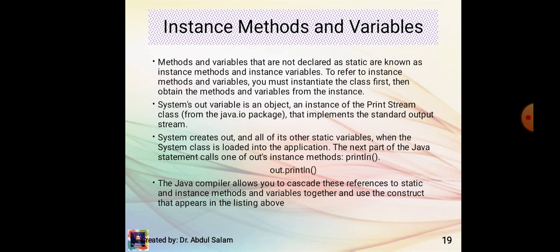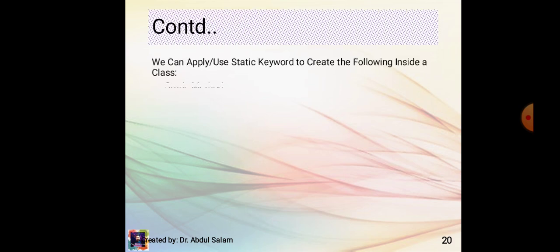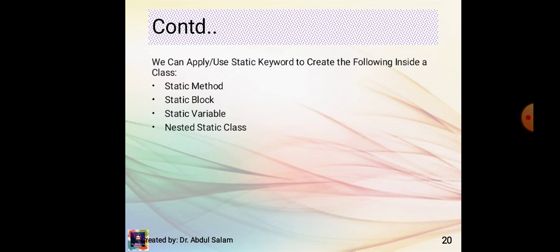The Java compiler allows you to cascade references to static and instance methods and variables together, using the construct System.out.println. We can apply the static keyword to create the following inside a class: static method, static block, static variable, and nested static class.